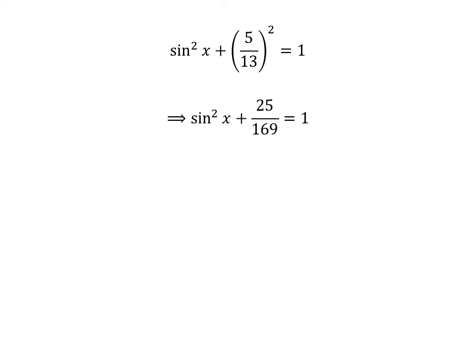We know square of 5 is 25 and square of 13 is 169. So square of sine of x plus 25 upon 169 is equal to 1. Shifting 25 upon 169 to the right hand side of the equation gives us square of sine of x is equal to 1 minus 25 upon 169.